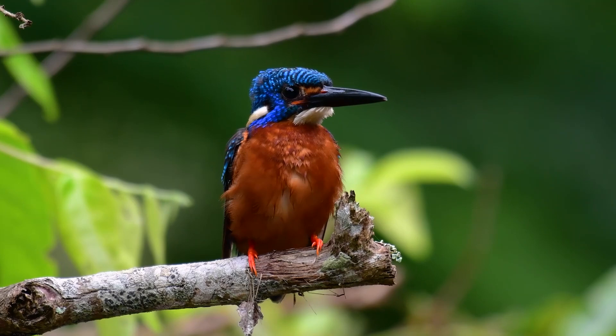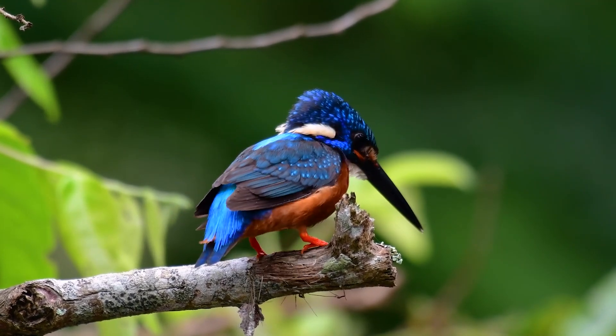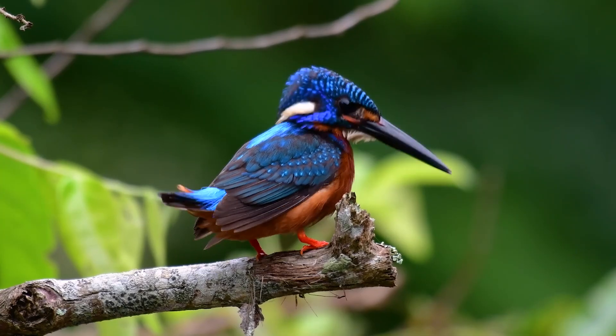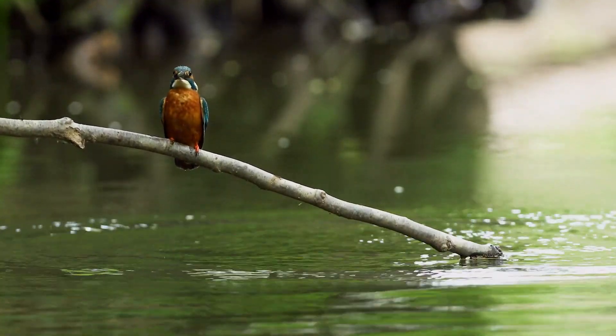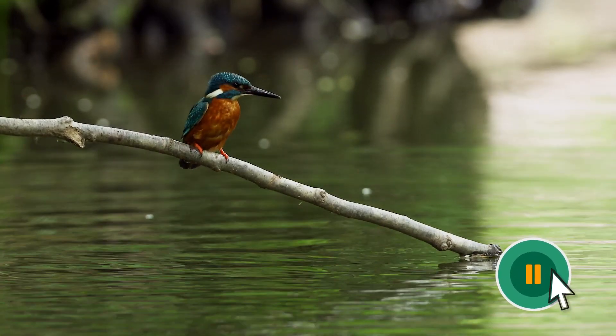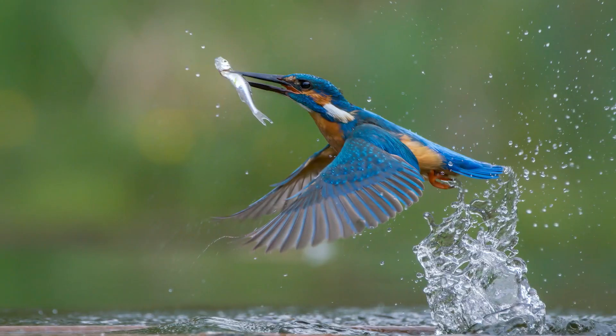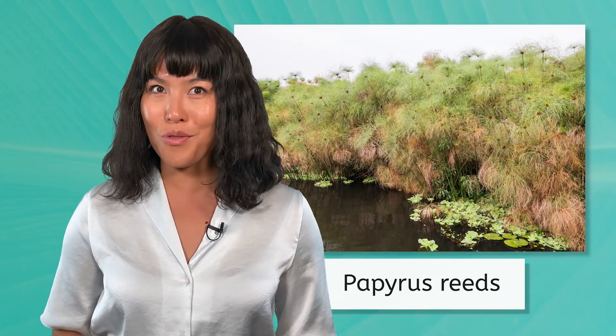Just above the water's surface, we spot a kingfisher. Why do they have such a long, pointed beak? It might have something to do with this behaviour. What is it diving into the lake for? Of course, it's hungry. And what about the plant life here? It also thrives in the warm, humid environment, especially the papyrus reeds that form thick mats along the shoreline.